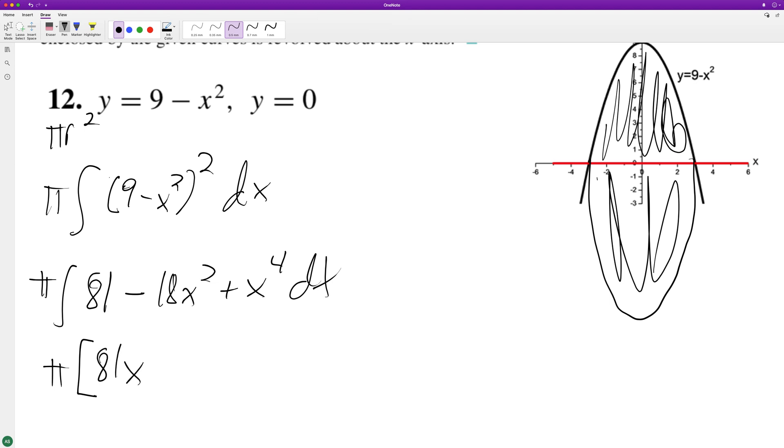81x minus divided by 3, so we get 6x cubed plus x to the fifth over 5.